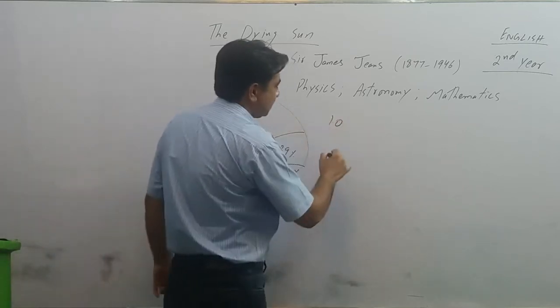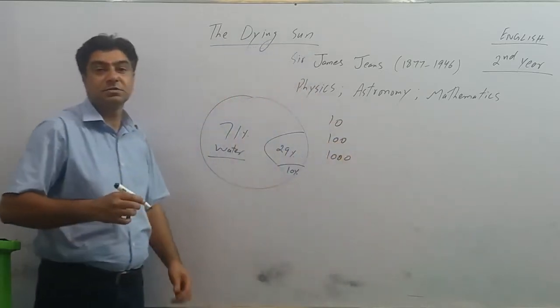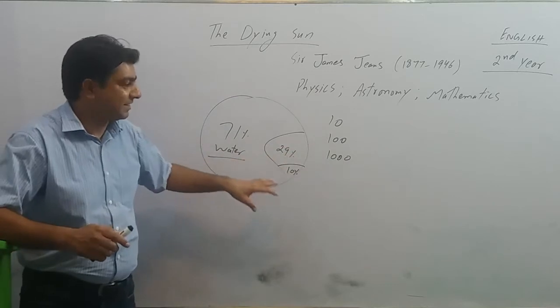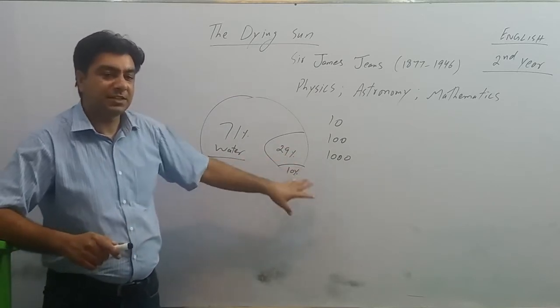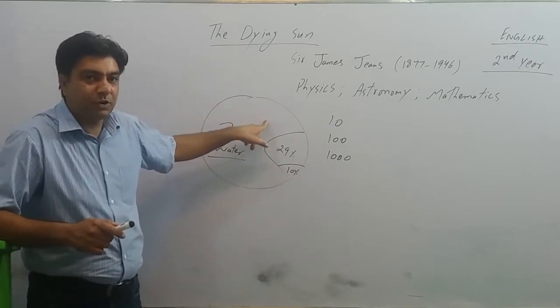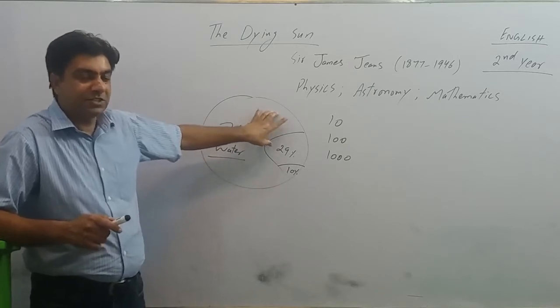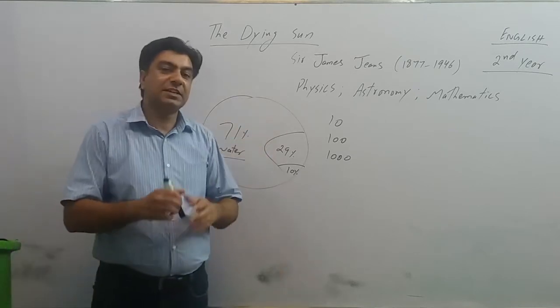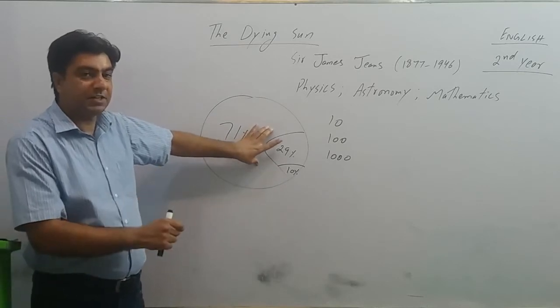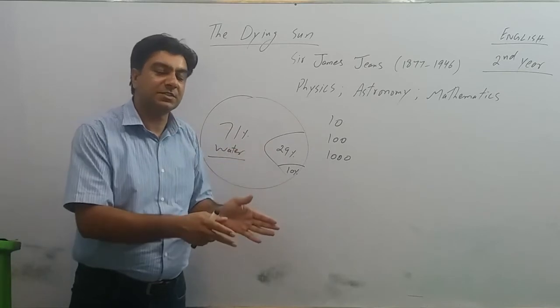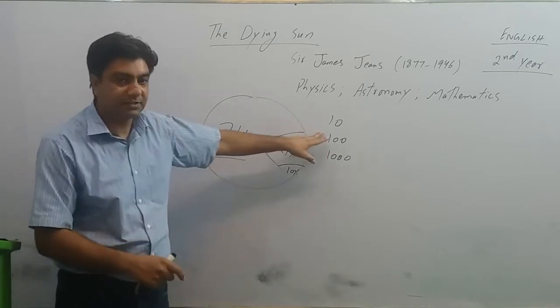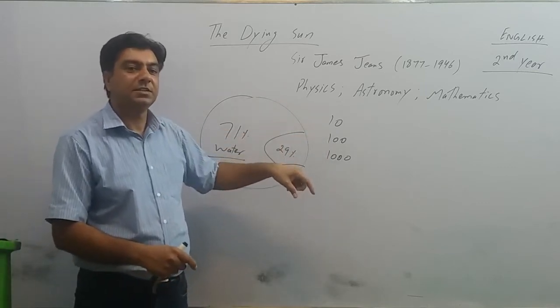Ten times? A hundred times? Thousand times? Actually, scientists believe that this sun of ours is so big that 1.3 million planets of the size of Earth can be packed inside the area of the sun. Have you got the idea how big the sun is?